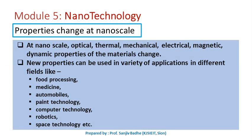It is observed that when materials are reduced to the nanoscale they show different properties compared to those exhibited at the bulk or macro level. For some materials, optical, thermal, mechanical, electrical, or magnetic properties may change. These new properties can be used in a variety of applications in different fields like food processing, medicine, automobiles, pen technology, computer technology, robotics, and space technology.